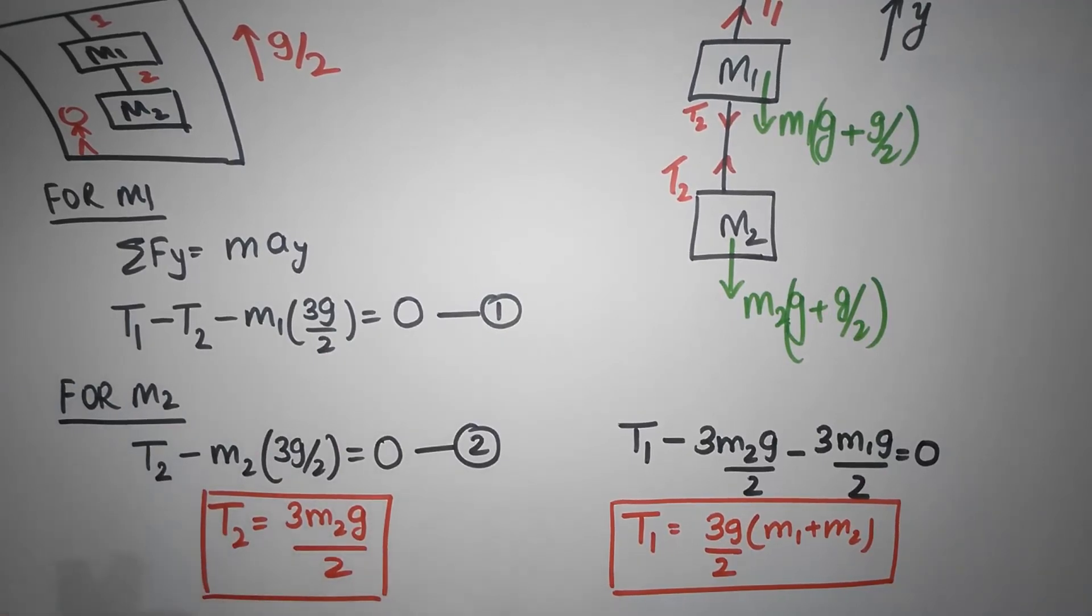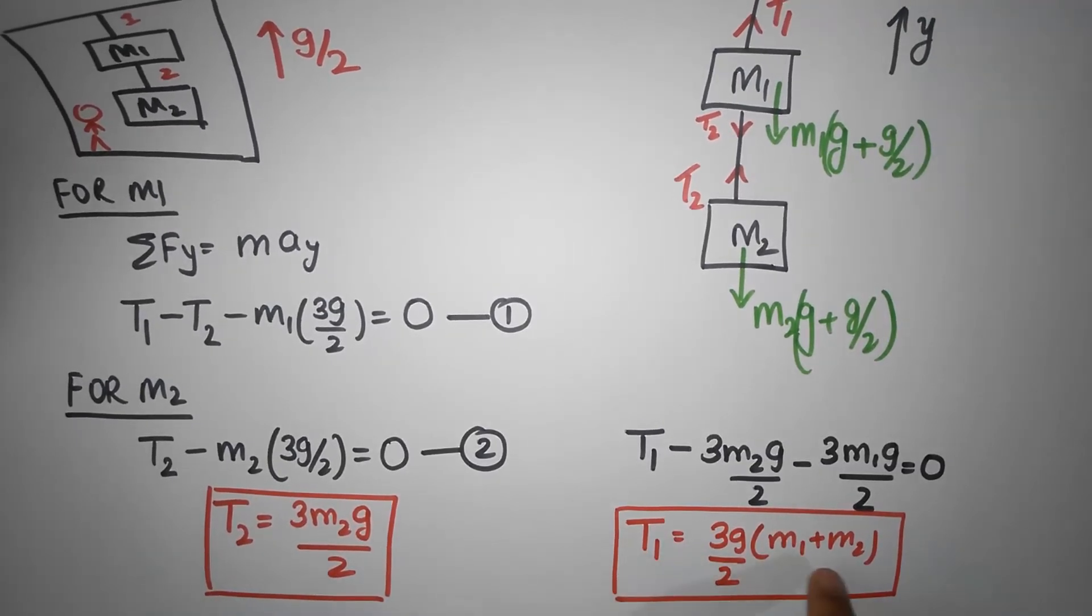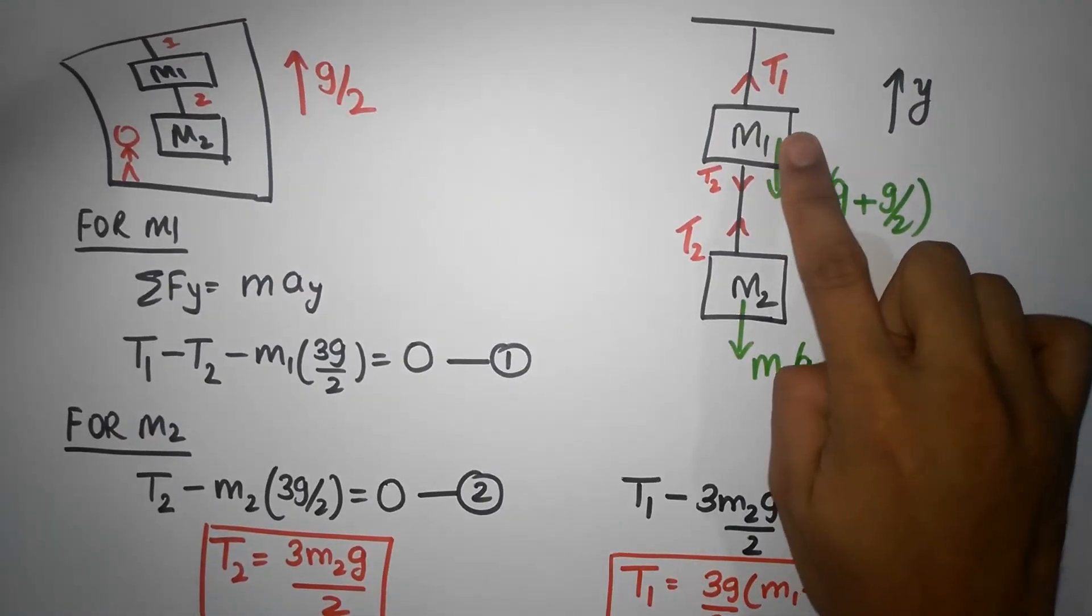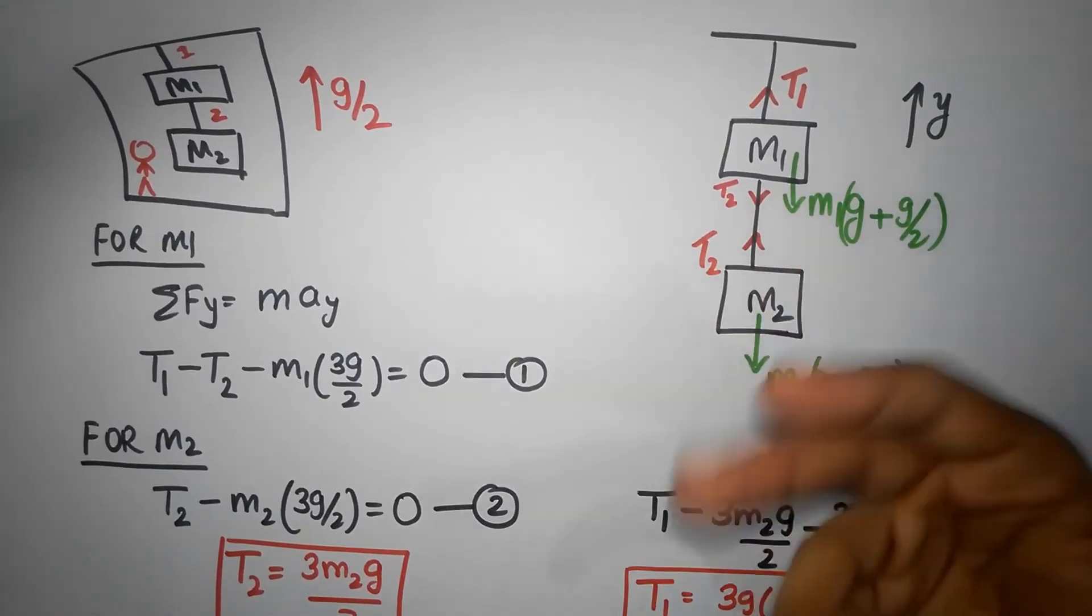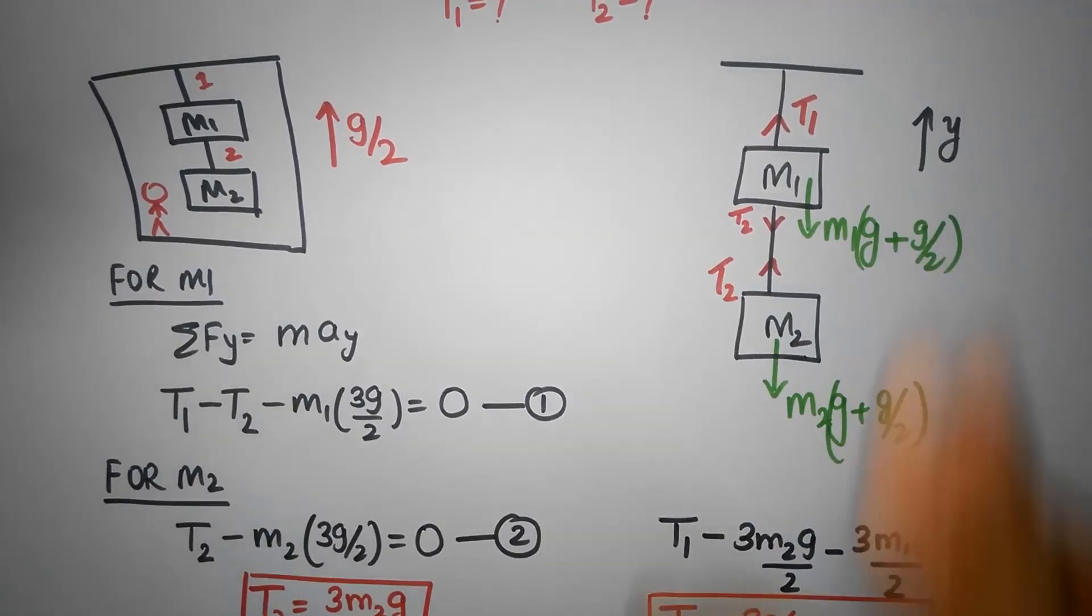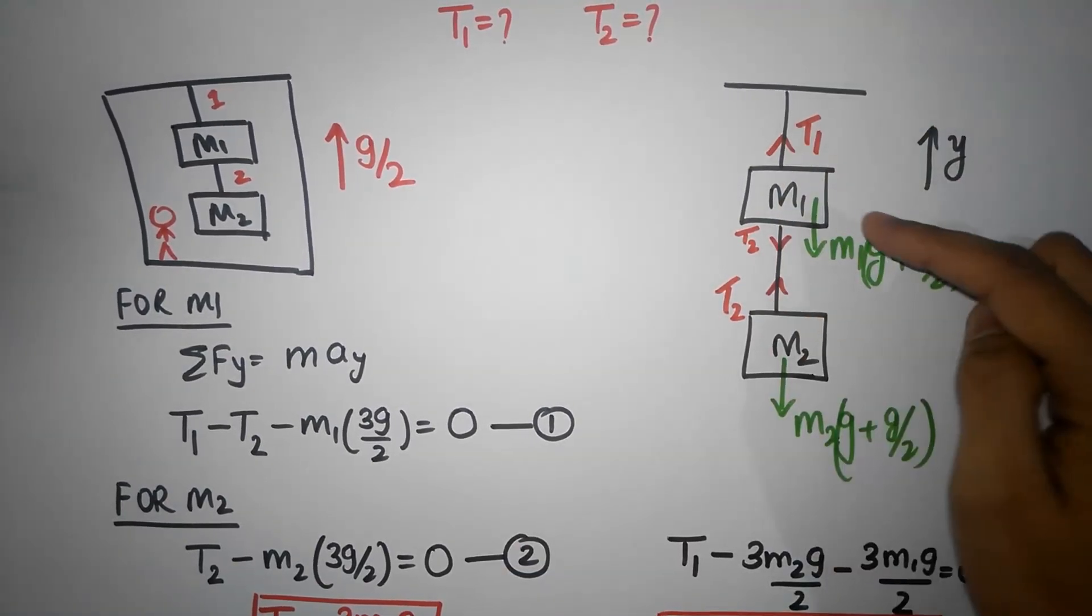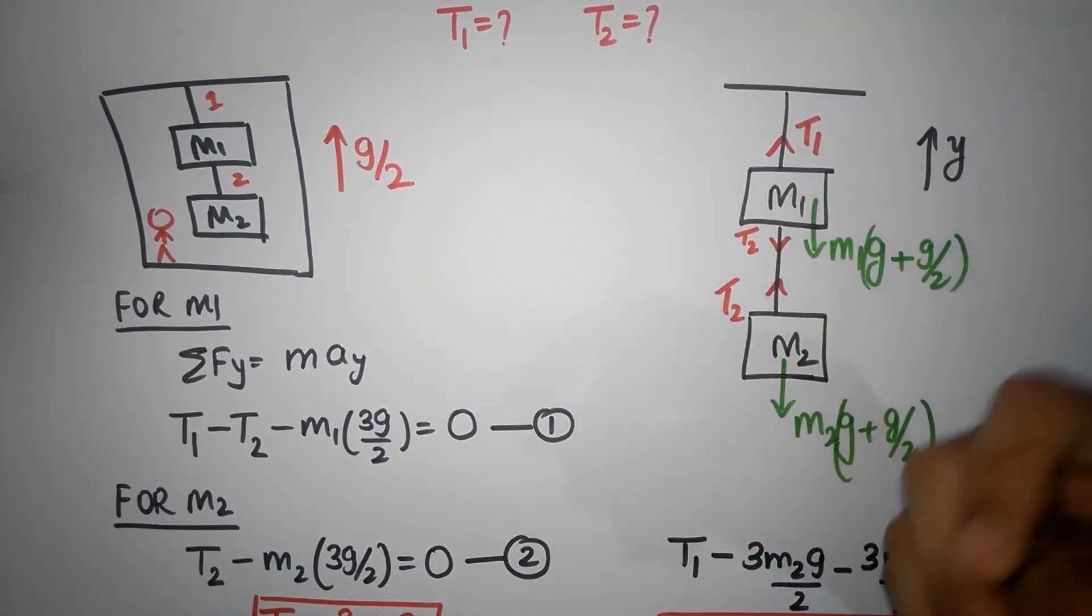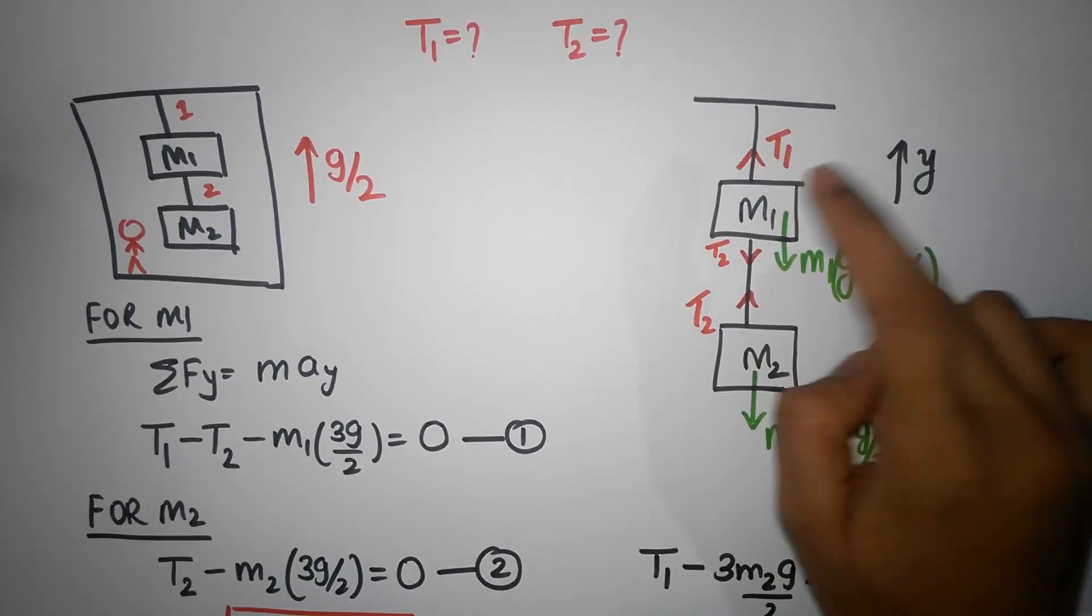Now you could have done this actually very fast. First of all, see it makes sense that T2 is smaller than T1. In T1 I have 3g m2 by 2 plus 3g m1 by 2. That makes sense because this string not only has to support the weight of this guy, but it also has to support the weight of that guy, or at least in our trivial language we would say that. But as long as physics is concerned, don't think that this string is bearing the weight of m1 and m2. Instead, it's much better and more accurate to think of it that this guy is pulling the string and the string is in turn pulling this fellow.